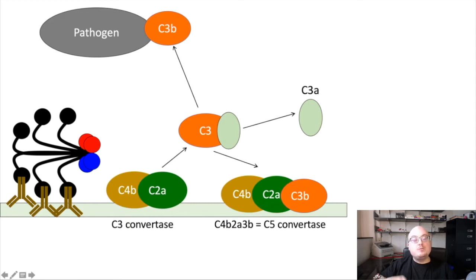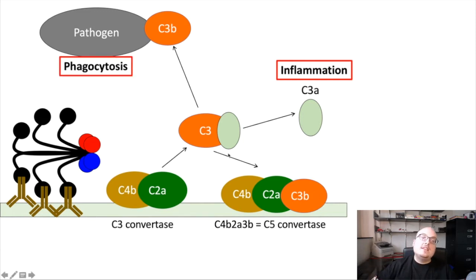But this is kind of a branch point where each of the effector mechanisms originates. So C3A is really important for promoting inflammation, that first effector mechanism, whereas C3B binding to pathogens can serve as an opsonin which promotes phagocytosis. And the formation of a C5 convertase is most important for forming the membrane attack complex.